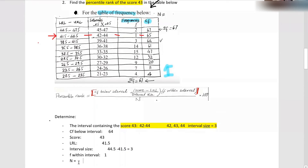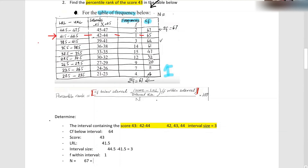The sample size n — even though we already talked about it, I want to make sure you're following. Luis, what is n? 67. Good — it's right here, which is the same as the sum of the frequencies.